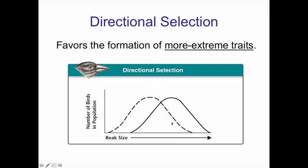In this graph here, we see it moving to the right. It could move to the left as well. Let's go ahead and take a look and break down what's going on in this graph. Here we have the number of birds in a population. Here we have the beak size. Just to make it even more clear, I'm going to draw the beaks down here.